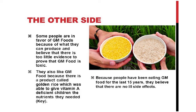Some people favour GM foods because of what they can produce and believe there is too little evidence to prove GM food is toxic. They also point to golden rice as giving vitamin A-deficient children the nutrients they need. Because people have been eating GM food for the last 15 years with no ill side effects, supporters argue it is safe. However, concerns remain that humans are being used as guinea pigs — if after 20 or 30 years it emerges that GM rice caused more kidney stones, allergies or other problems, that would be a serious issue. More study is needed; some countries have allowed GM crops, others still do not.